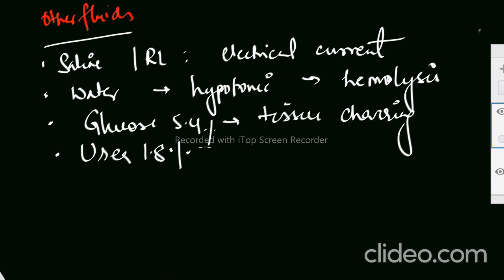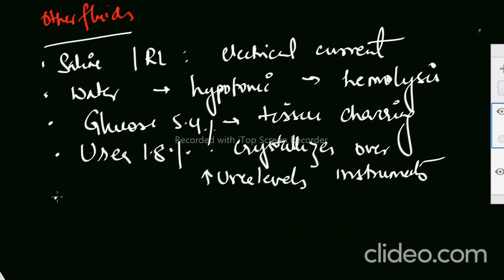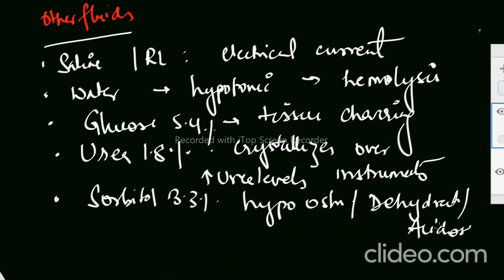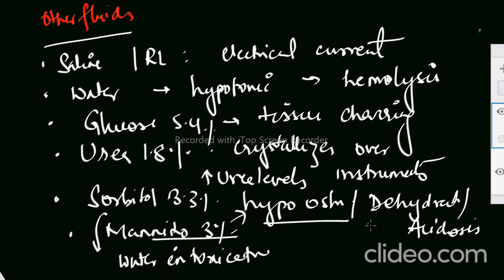Urea 1.8%, it crystallizes over instruments. So also it can increase the urea levels in the body unnecessarily. Sorbitol 3.3%, it can lead to hyposmolality, dehydration, as well as acidosis. We don't want these. Mannitol can cause hyposmolality, dehydration, acidosis, and sorbitol can cause water intoxication.